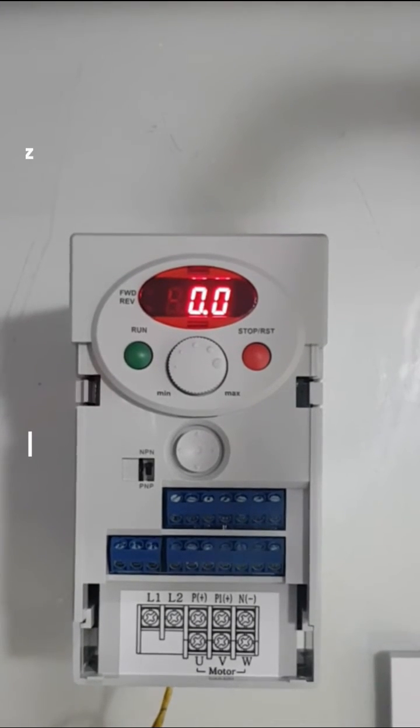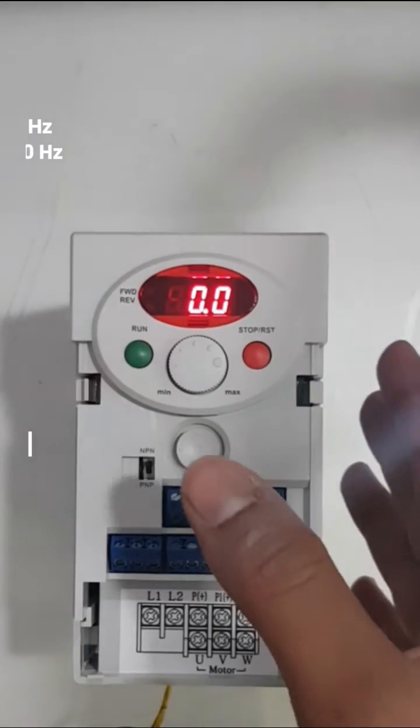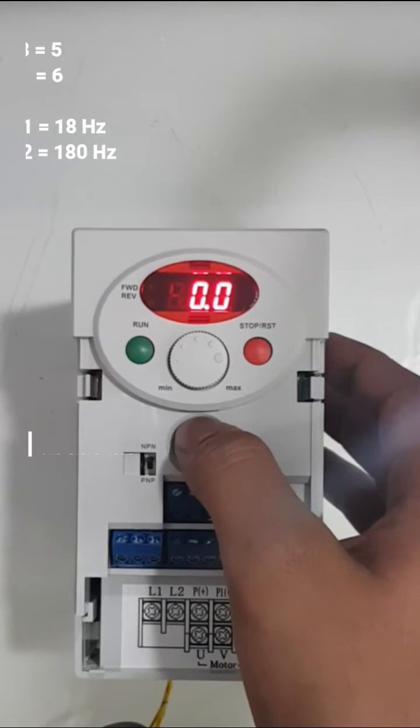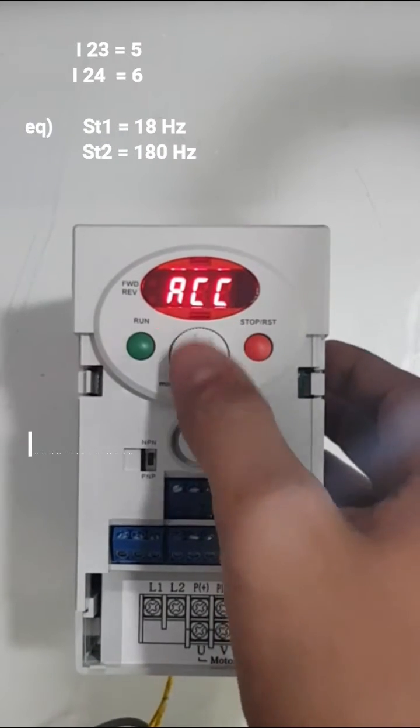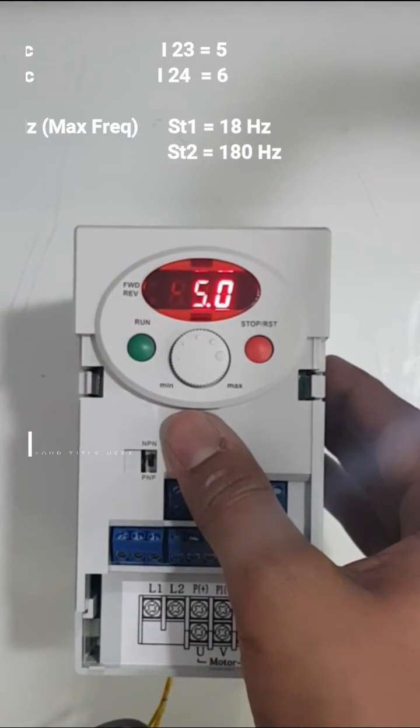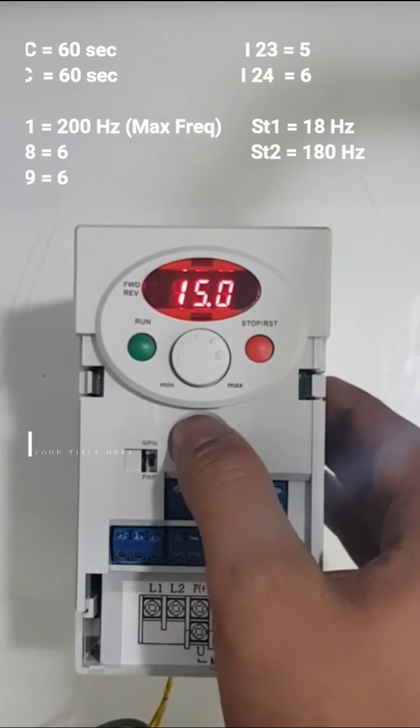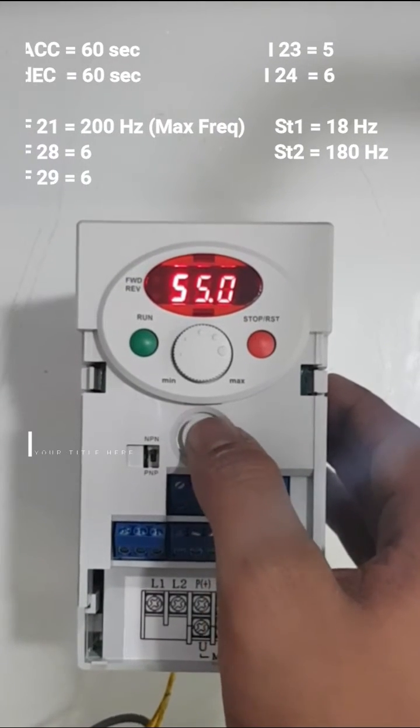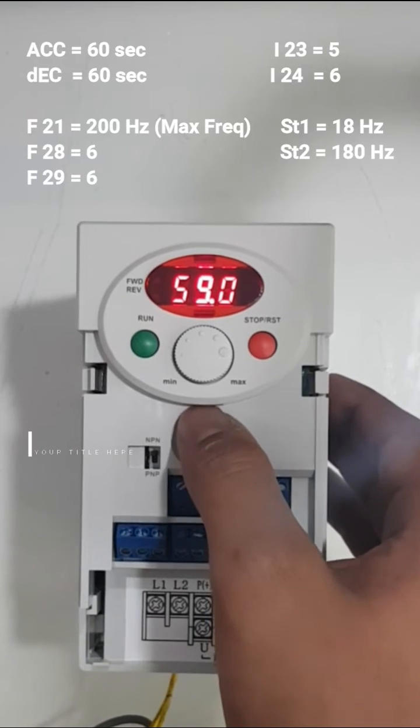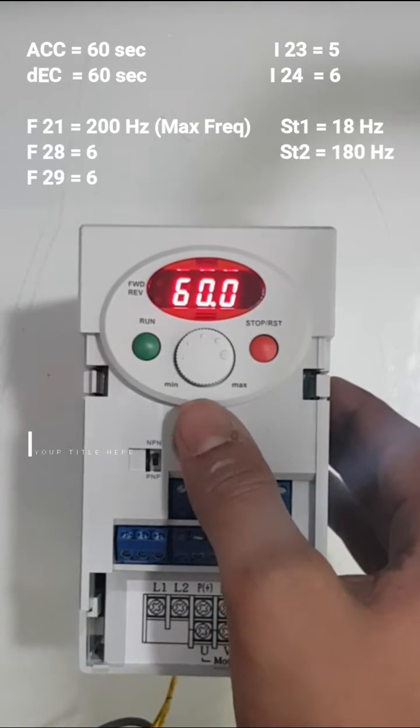In this video I will show you how to program for the washing machine. Just press up and you see ACC. Press ENTER by pressing in the middle, change it to 60 seconds. This will be the acceleration time.